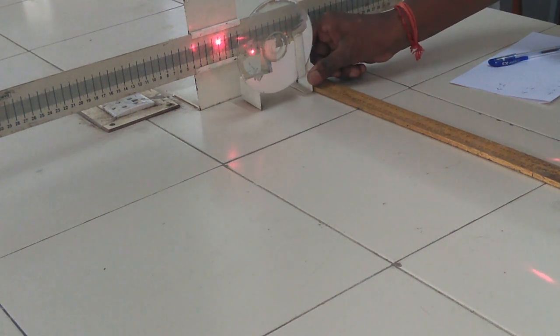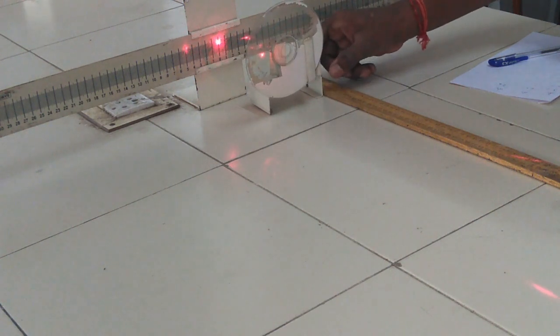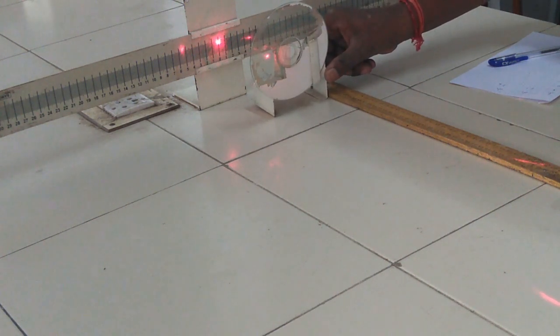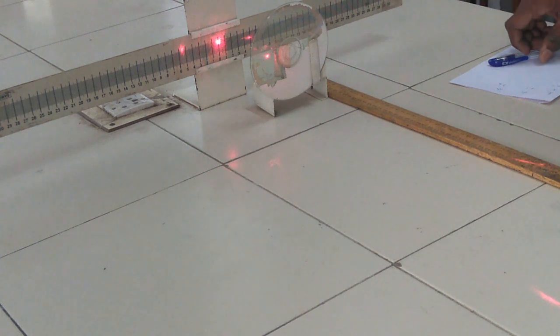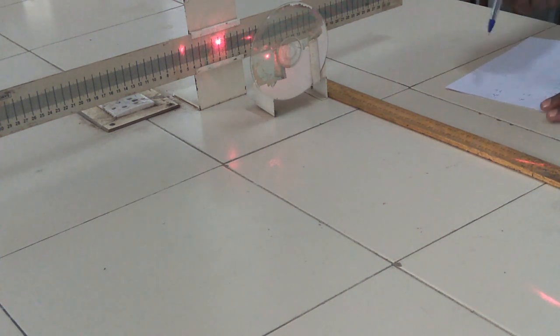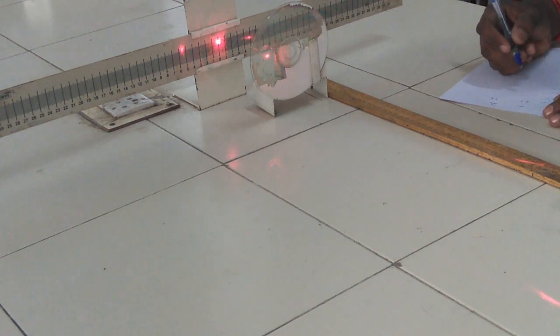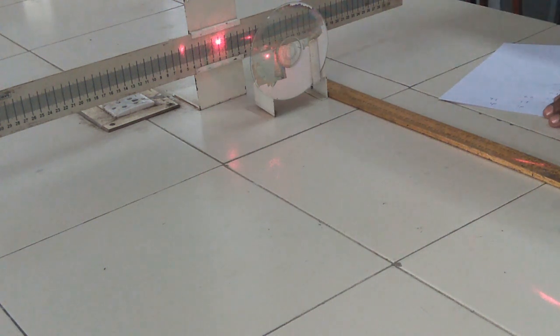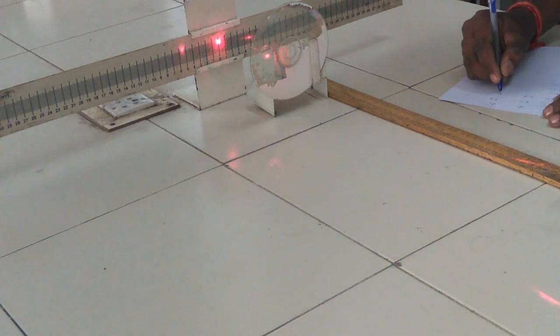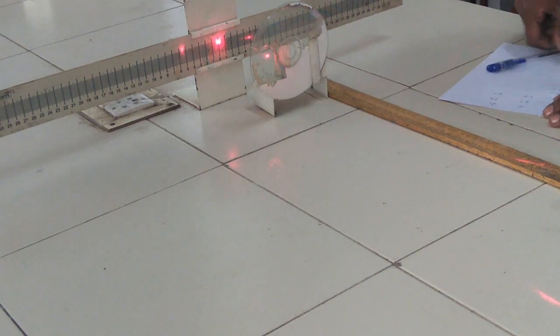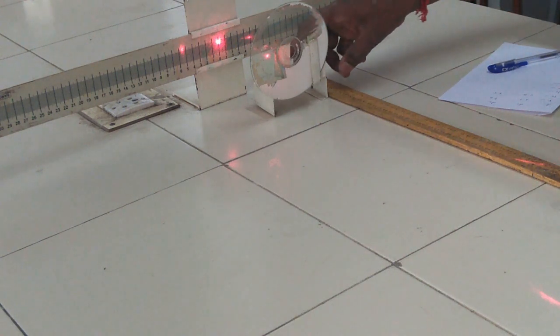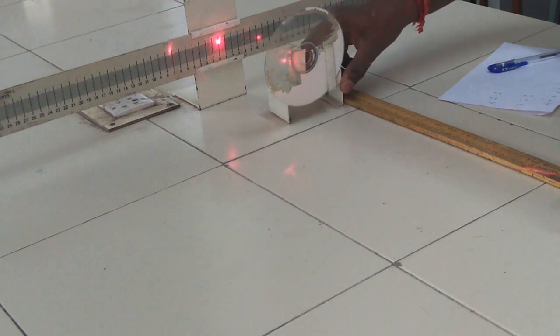Next, move to 10 cm, the distance between CD and screen. Measure the distance between the central maxima and the first order spectrum on both sides, left and right side of the central maxima. Distance noted.